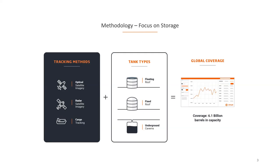Satellite images allow us to know the level of utilization of storage facilities equipped with floating roof tanks and see the level of capacity utilization in those facilities. Thanks to the cargo tracking data, we can refine our figures and extend our coverage to two other types of tanks: fixed roof tanks and underground caverns. Because we cover these three types of tanks together, we have the largest coverage capacity when it comes to onshore storage — amounting to more than six billion barrels today.